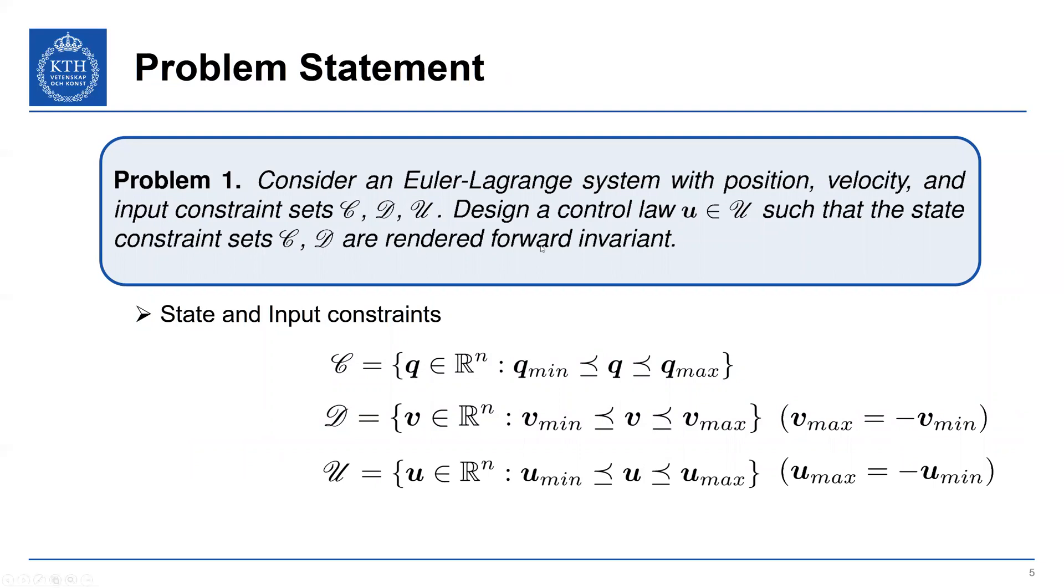So the problem that we want to address is how to design a control law that respects our actuator constraints, but also renders these sets, the state constraint sets C and D, forward invariant. Now, what I mean by forward invariant is that if a state starts in this set, they remain in this set for all time. So basically, safety is ensured for all time.